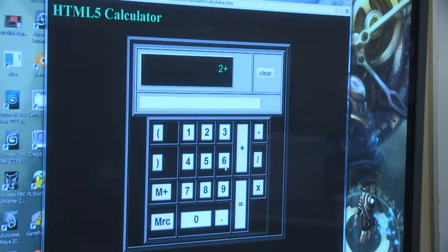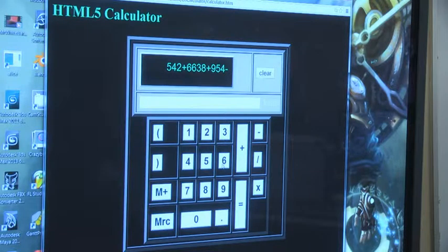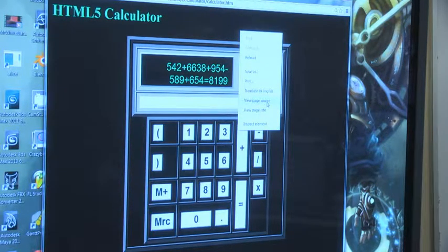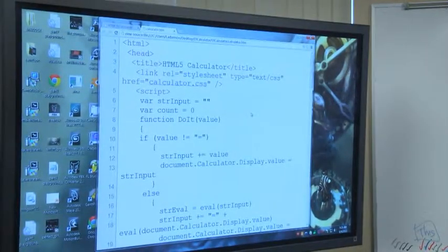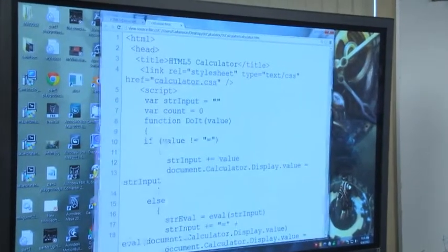And then I can add something to the 2. I can clear this and I can do a string of calculations: 421 plus 638 plus 6638 plus 954 minus 589 plus 654 equals. And there's the answer. So you might have to check it yourself, but notice all the processing, the internal processing that went on here as well as the external. Now let's have a look at the source code that made this up. What I'm going to do is I'm going to view the page source and let's see what's in it.